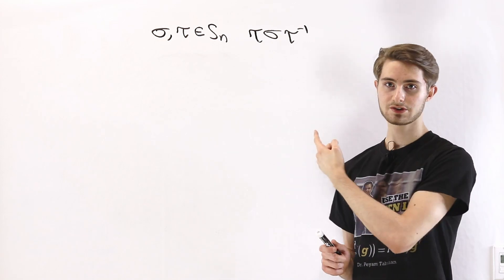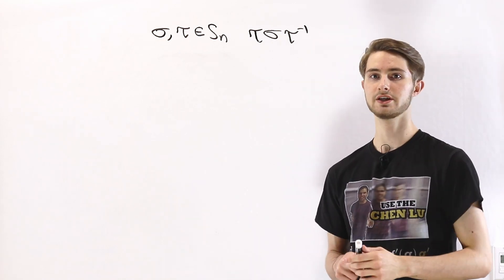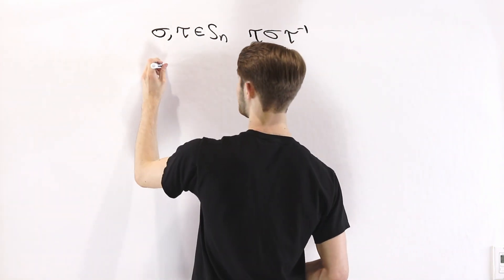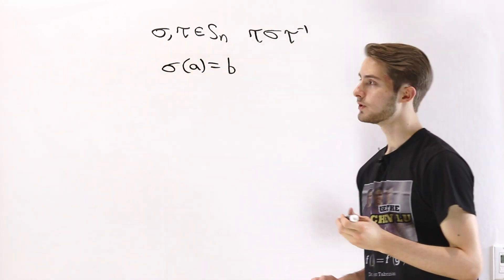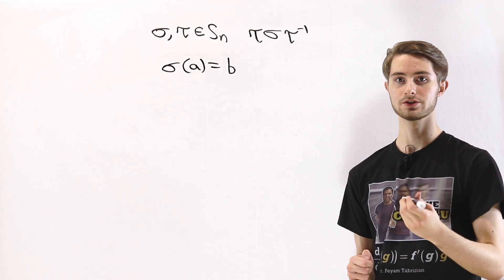In order to do that, let's look at what this conjugation does to a single input. Suppose that we have sigma of A being equal to B. What is this conjugation going to look like?